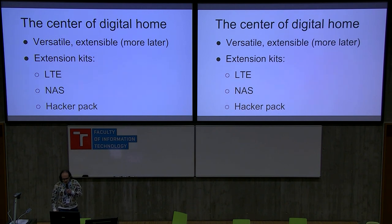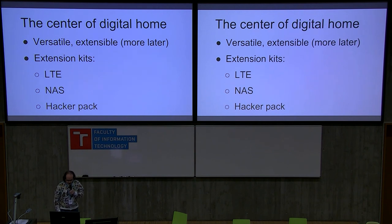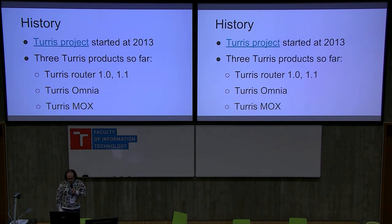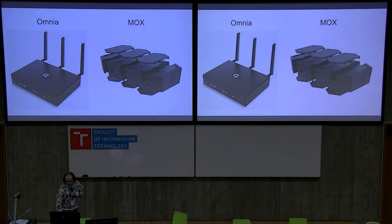Another marketing point is that they say it's the center of the digital home. The routers are pretty versatile and extensible — extension kits are usually LTE, NAS, HackerPack, and others. History: the Turris project started in 2013, and there are three Turris products so far: the Turris Router 1-series, Turris Omnia, and Turris Mox. Omnia is a compact device, and the Mox's unique point is that it's modular — the modules can be connected in daisy chain, and even the plastic box is modular.